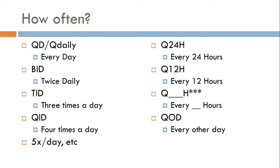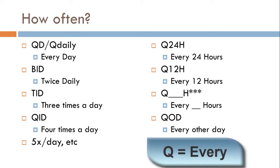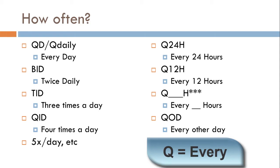You may also see interval codes like Q24H — every 24 hours. Anytime you see 'Q,' you can replace it with the word 'every.' So Q24H is every 24 hours, Q12H is every 12 hours, and Q-blank-H means every however many hours the prescriber deems appropriate. You'll also see QOD, which means every other day — this can get confusing when compared to QD.